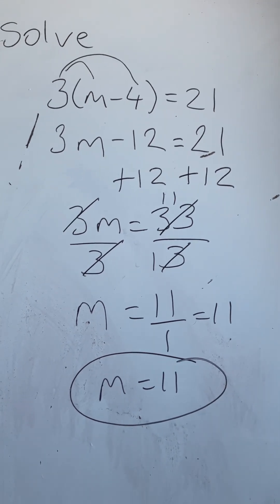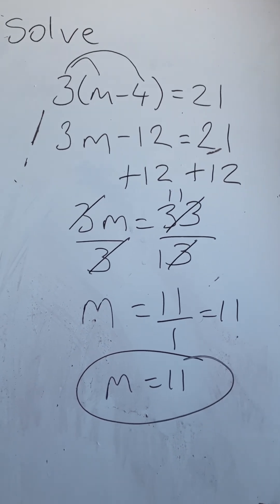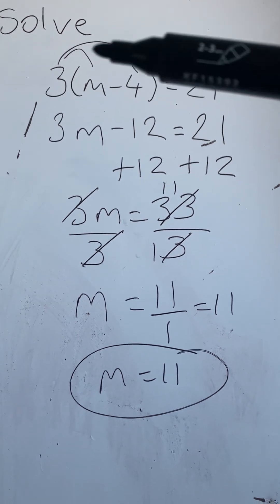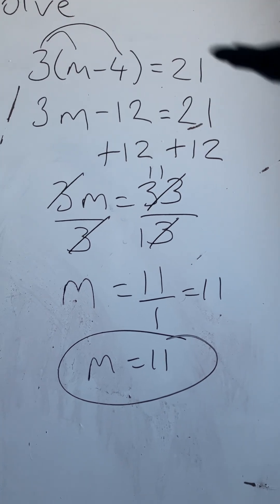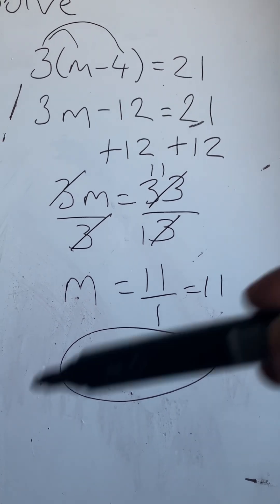Now there is another way to do it. Another way is to divide both sides of the equation by 3. So I get m minus 4 is equal to 7. Add 4 to both sides and you get m is equal to 11.